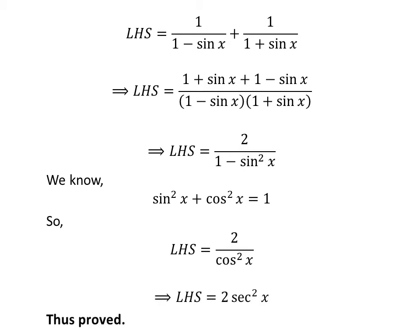We know 1/cos x = sec x. So, LHS = 2 sec² x, which equals the right-hand side of the identity. Thus, we proved the identity.